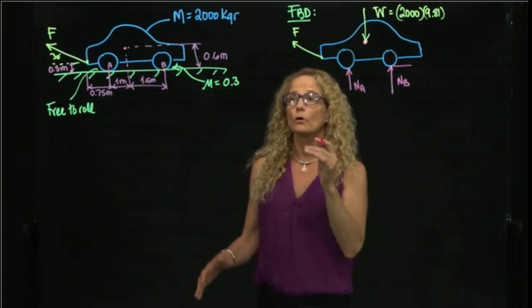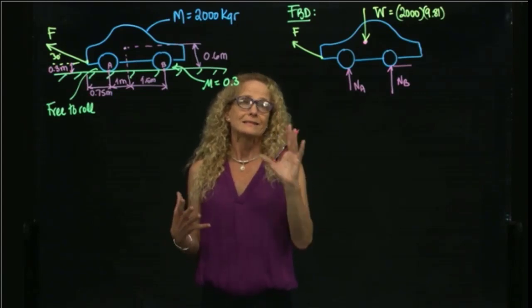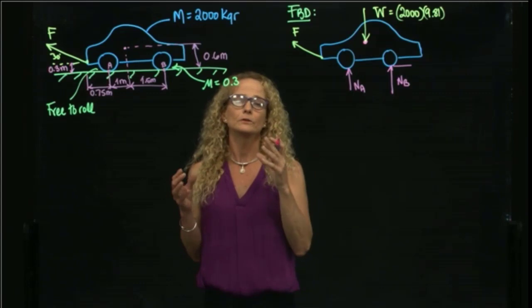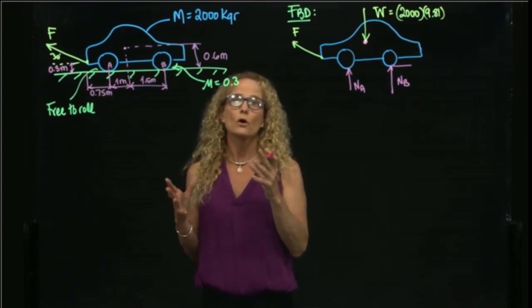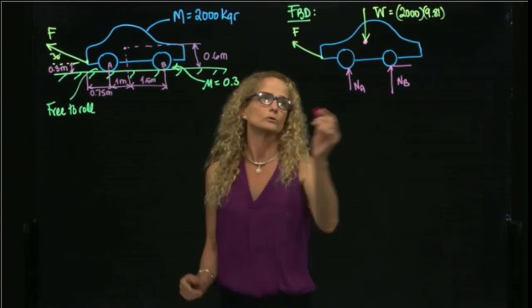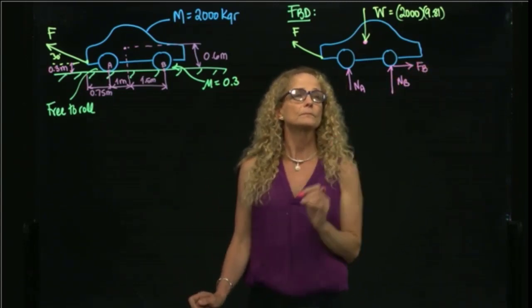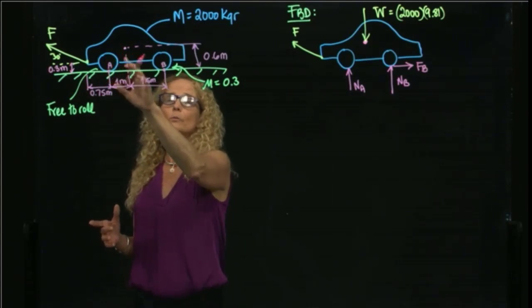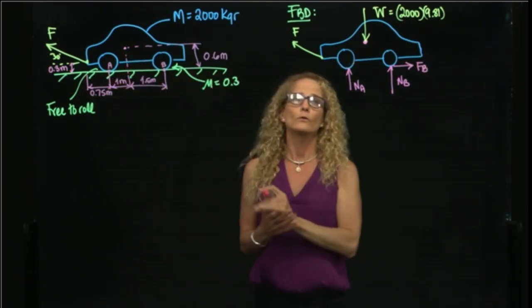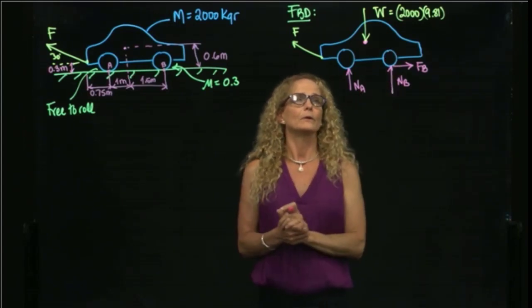The direction of the friction force — since the system is still in equilibrium and not moving — will always go in the opposite direction of the tendency of motion. Therefore it goes in this direction. Wheel A is free to move and does not contribute to the friction force of the car, so the brakes are only on the rear wheel.